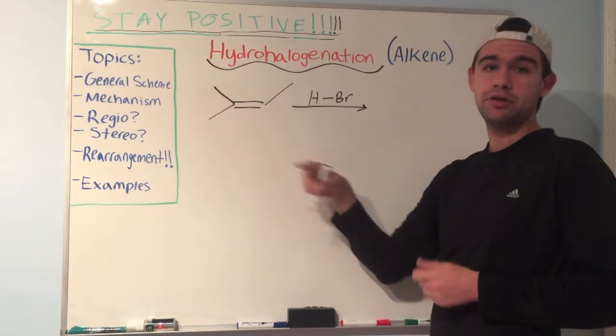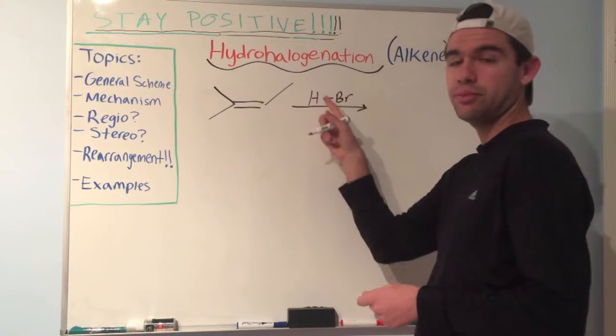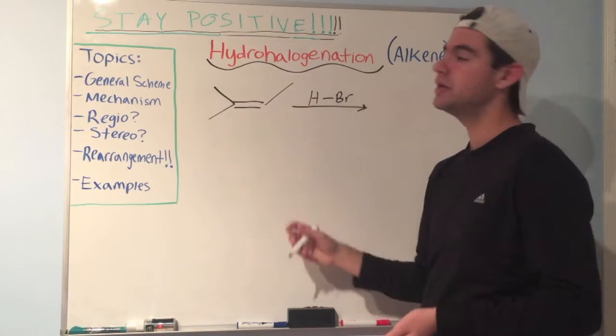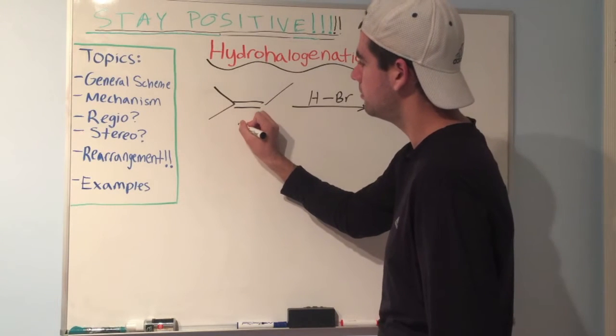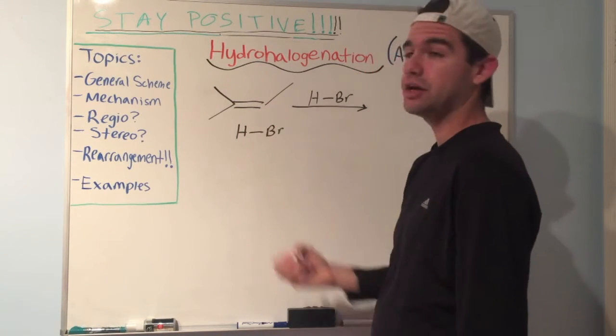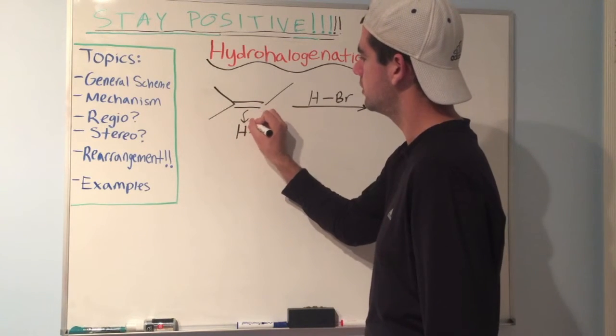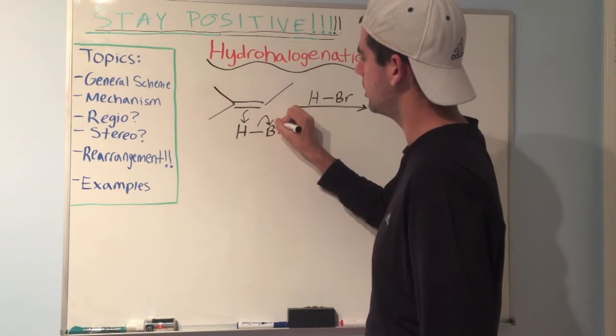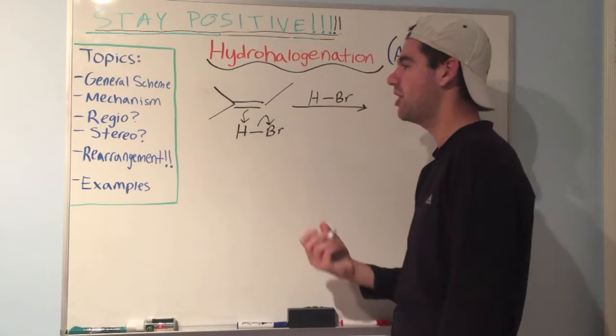So what happens is, remember, this alkene, this pi bond, is nucleophilic, and if we have it in the presence of acid, it'll get protonated. So let's draw in our H-Br. This nucleophilic pi bond will grab the hydrogen, send those electrons over to bromine, forming Br-.